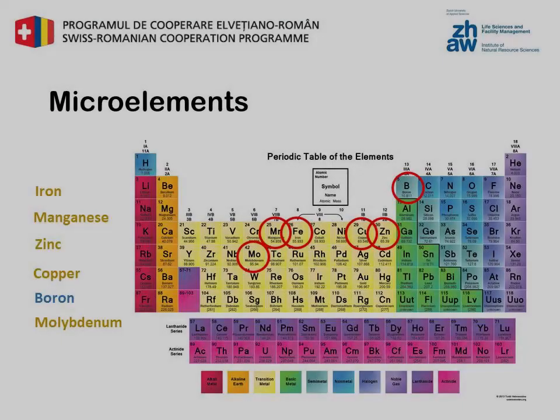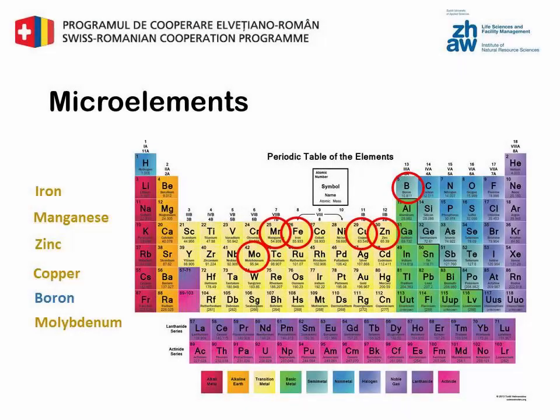The micro elements required by plants are iron, manganese, zinc, copper, boron, and molybdenum. They are important for many biological processes in plants, however only in very small quantities.